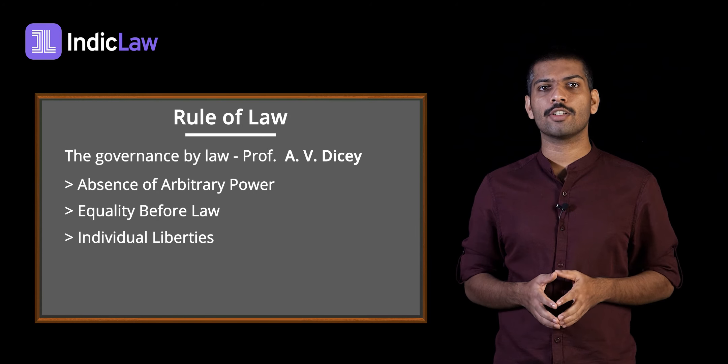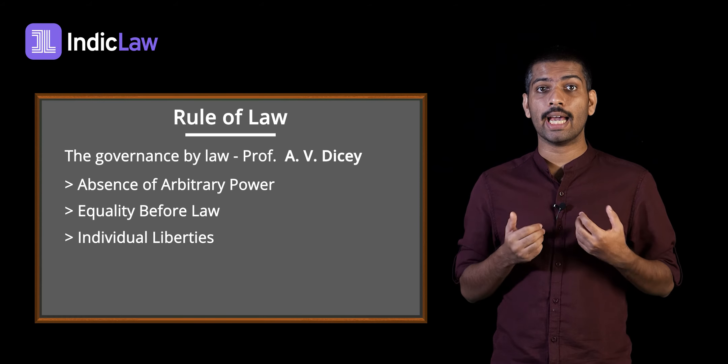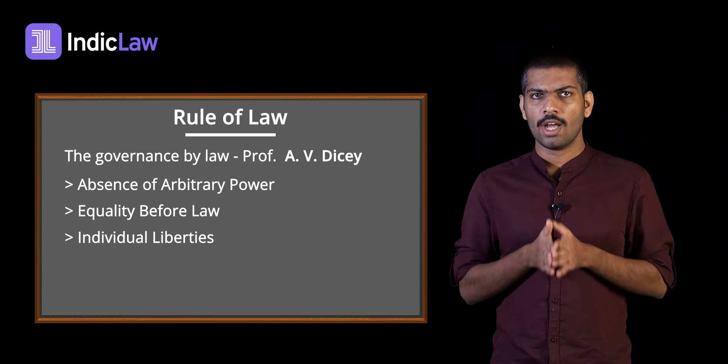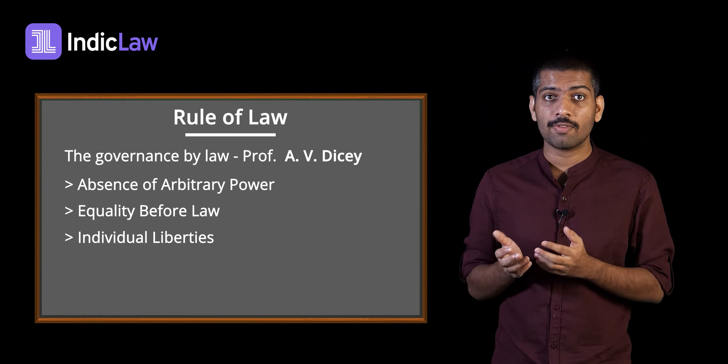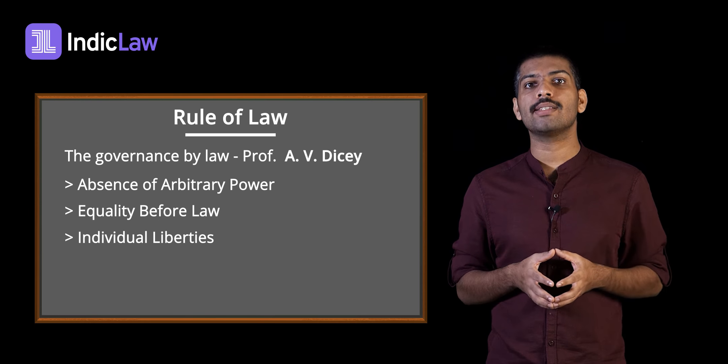The final facet of Rule of Law is the presence of Individual Liberties. Individual Liberties are guaranteed by our Constitution. Our Judiciary is also vested with significant powers to scrutinize the actions of the state and uphold the sanctity of individual liberty.